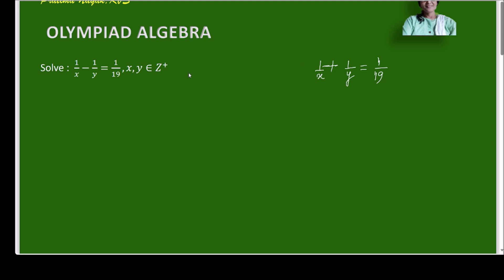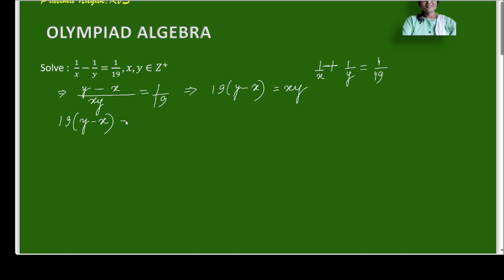I will proceed in the same way as before. Simplifying the left hand side with xy as the LCM, I get y minus x over xy equals 1/19. On cross multiplication I get 19 times (y minus x) equals xy. Observing the left hand side, there is a factor of 19, and the right side is the product of x and y — that means either x or y must be divisible by 19.